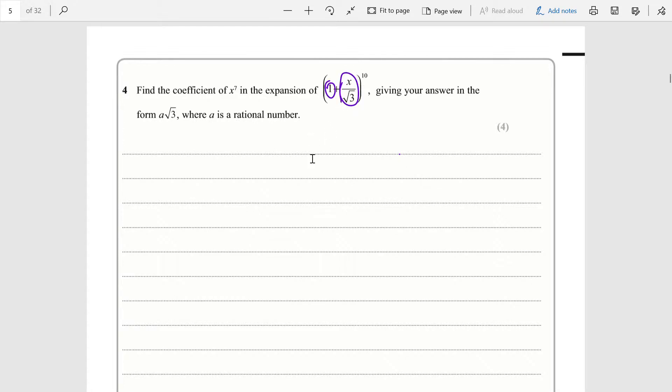We have the binomial expansion here. Our first term is 1 and our second term is x over root 3. We have to find the coefficient of x to the power of 7, so when x over root 3 has been selected out of the brackets 7 times and 1 has been selected 3 times.